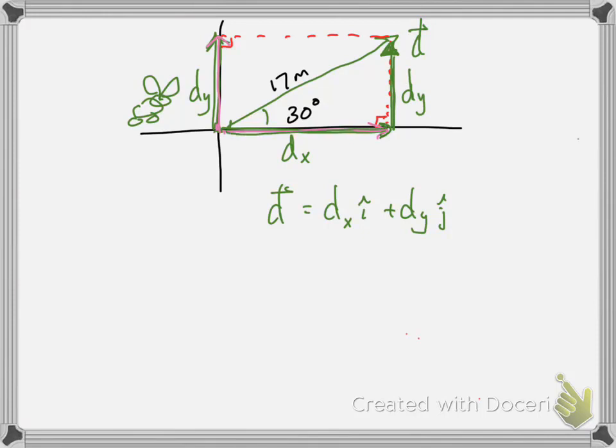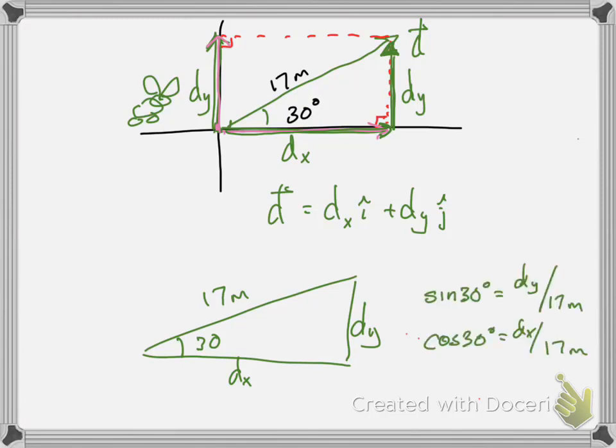Notice that dy, the vector component in the y-direction, can be moved over from the axis to make a right triangle. And so I'm going to just redraw dy over here, dy, and dx is down here. So let me take that triangle and just redraw it just to make sure we see it. We've got 30 degrees. We've got 17 meters. We've got dx and we've got dy. So now this is a triangle where we're just going to do geometry on this triangle.